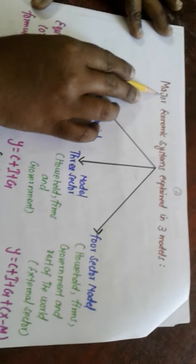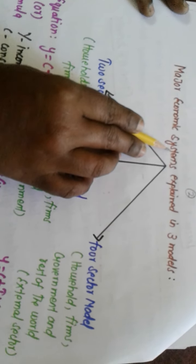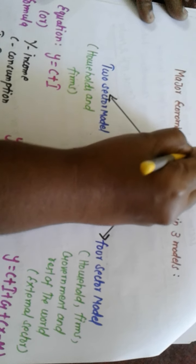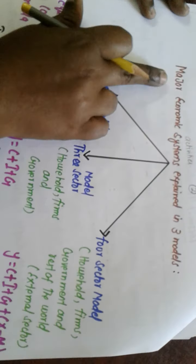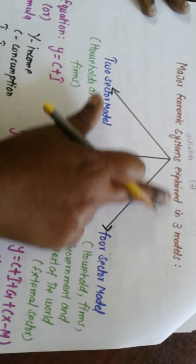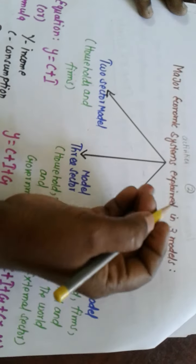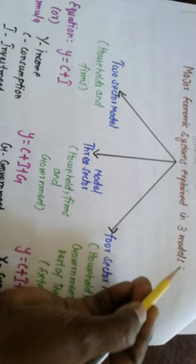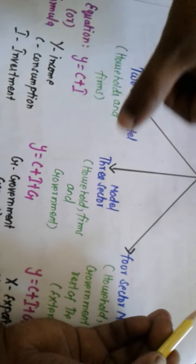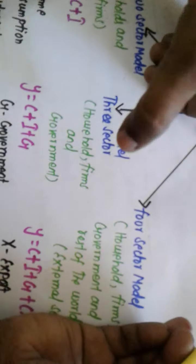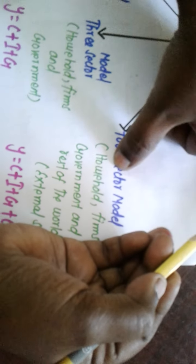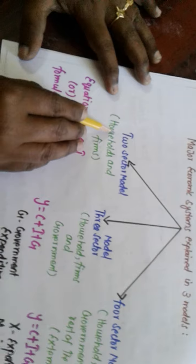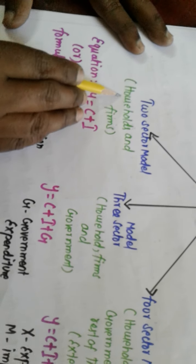The next concept is major economic systems, also known as economic activities. It is explained in three models — this is a very important topic. The first is the two-sector model, the second is the three-sector model, and the third is the four-sector model. Two-sector model is Part B (two marks), three-sector model is Part C (three marks), four-sector model is Part D (five marks). The two-sector model has household and firm.